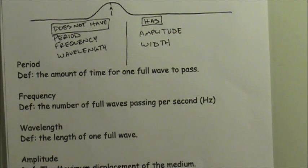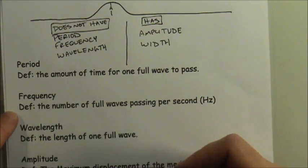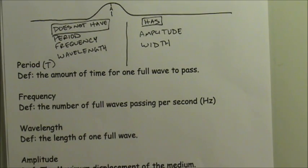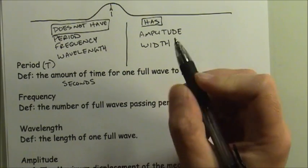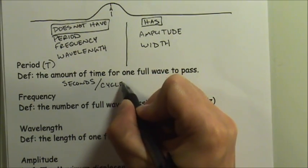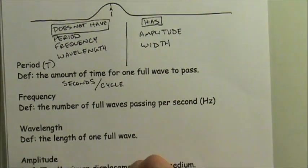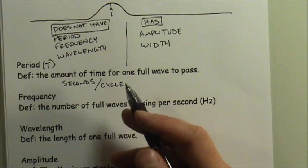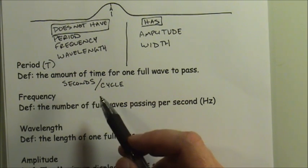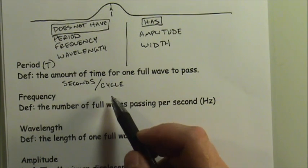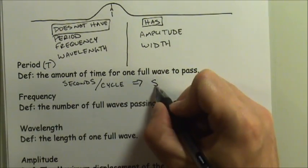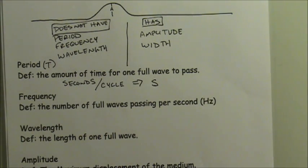Let's clarify these wave properties. The period is symbolized by the capital letter T, and it is the number of seconds per one full cycle. One full wave is one full cycle of the oscillation of the medium. 'Cycles' is not considered a unit - it's just a counter, not something measured with a device. So the units for period are simply seconds.